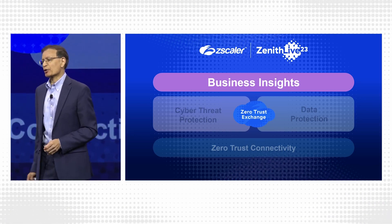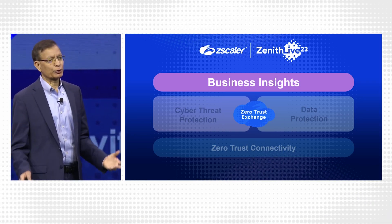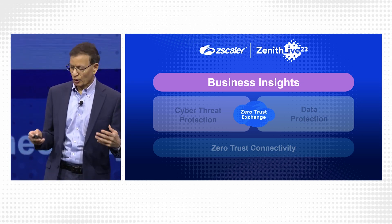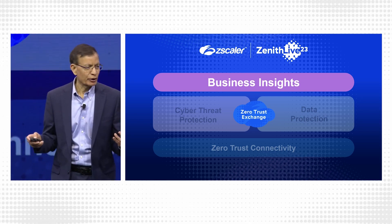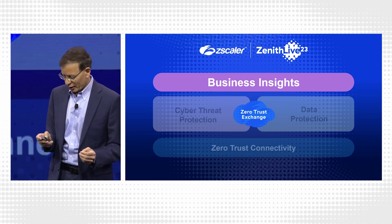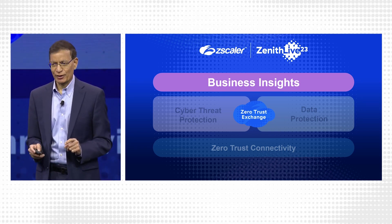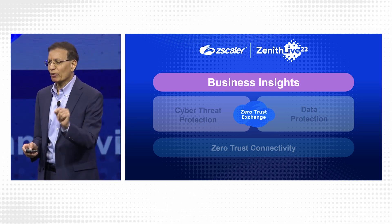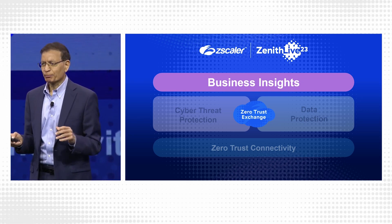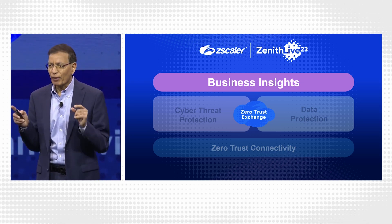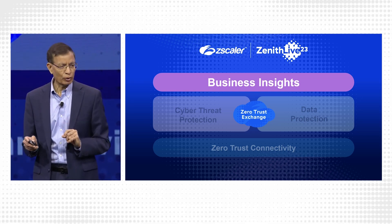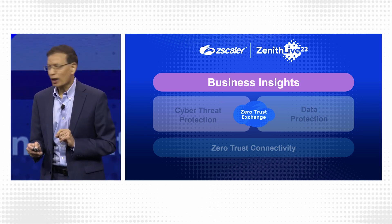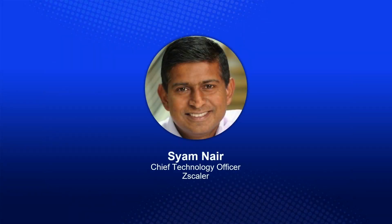The fourth area is business insights. With 300 billion transactions a day and trillions of telemetry data points a day, there's a lot of business insights to be had. Customers said: help us give more valuable information out of this. Business insights based on AI cloud has become our next big focus area. Let me invite Sham Nair, our CTO who recently joined us, to talk about the AI cloud and business insights area.